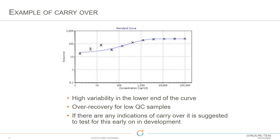One thing people suggest is reversing the pipetting order — starting low and going high rather than high to low. You can do that, but the carryover is still there. You're just hiding it. You don't want to hide it — you want to see it early and fix the problem so you don't get over-recovery with your QC samples.